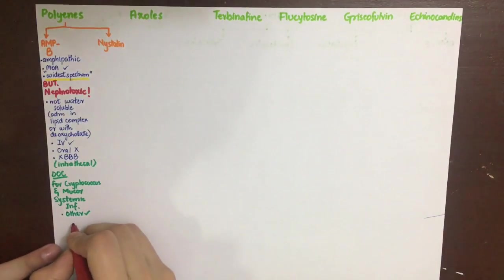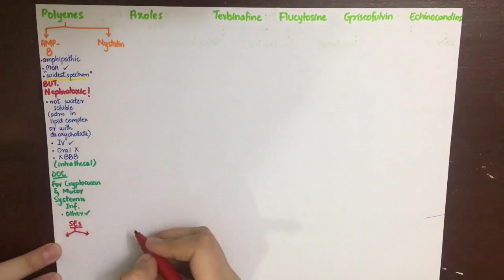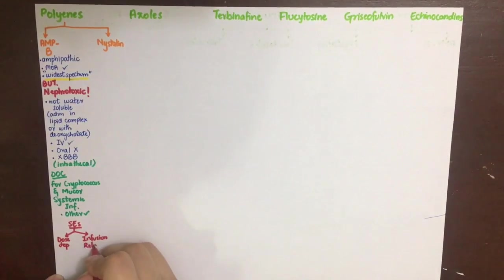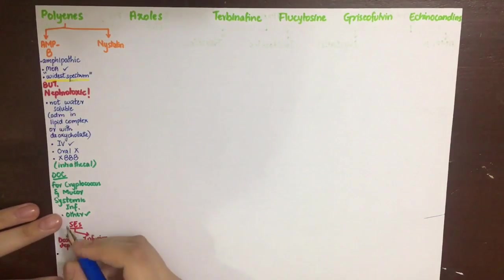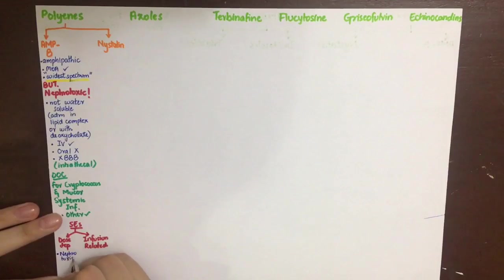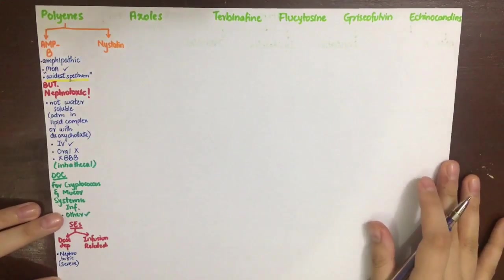Side effects can be dose-dependent and non-dose-dependent. It is the most toxic of all antifungal agents. Dose-dependent side effects include severe nephrotoxicity that can decrease GFR, cause renal tubular acidosis, lead to magnesium and potassium wasting, and normocytic normochromic anemia due to decreased erythropoietin release.